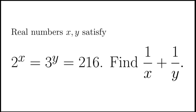Let's take a look at this problem. Let x and y be real numbers such that 2 to the power of x and 3 to the power of y are both equal to 216. Find the value of 1 over x plus 1 over y.